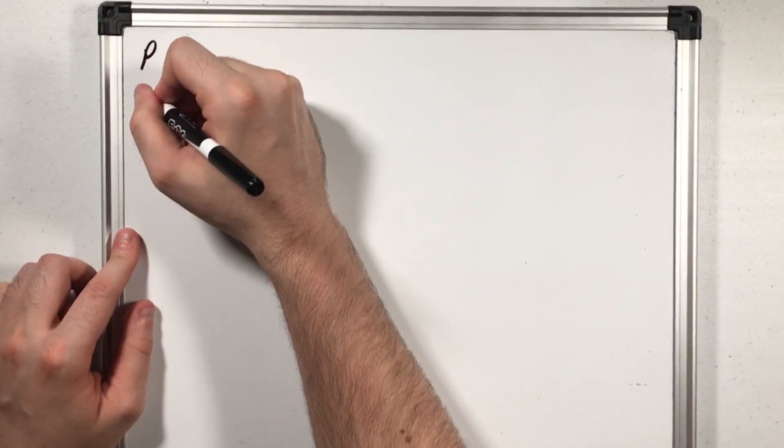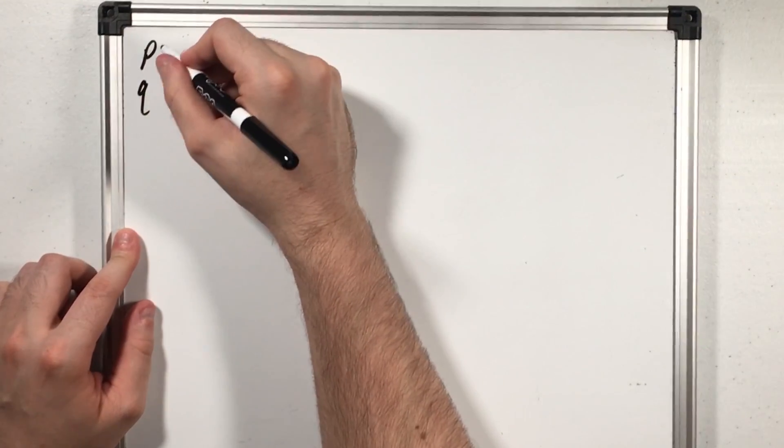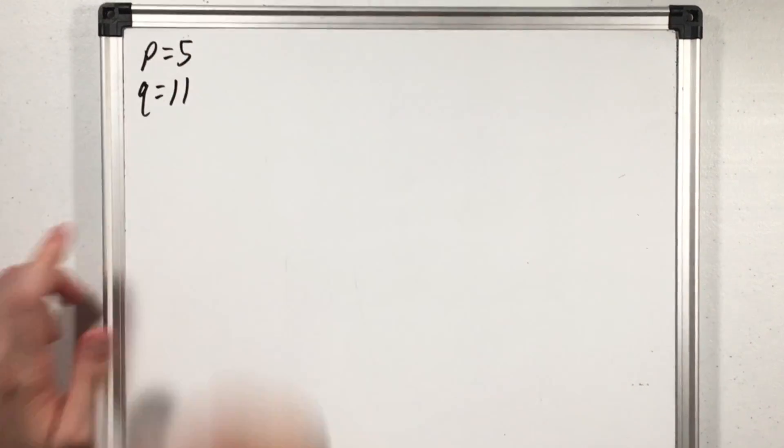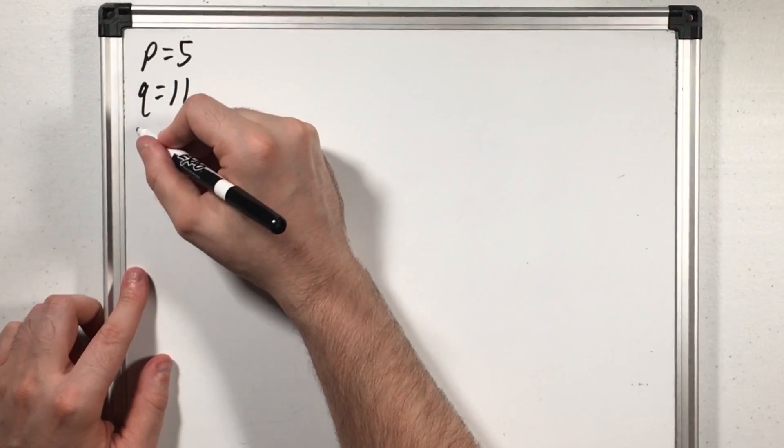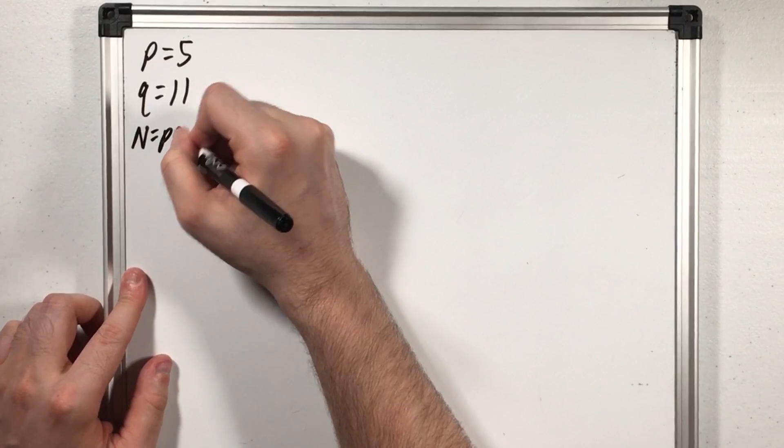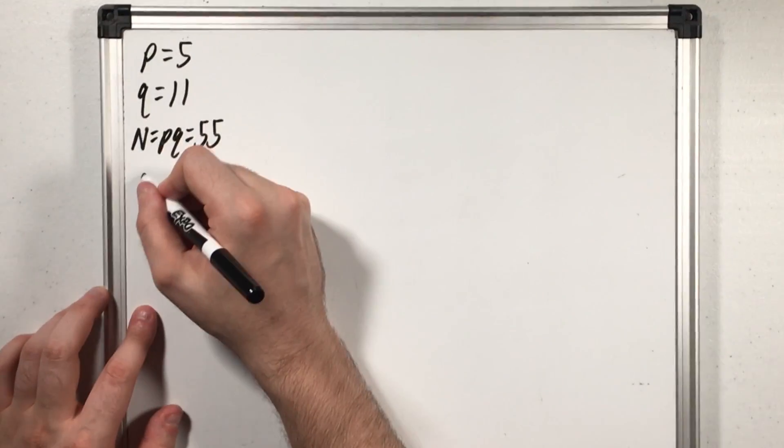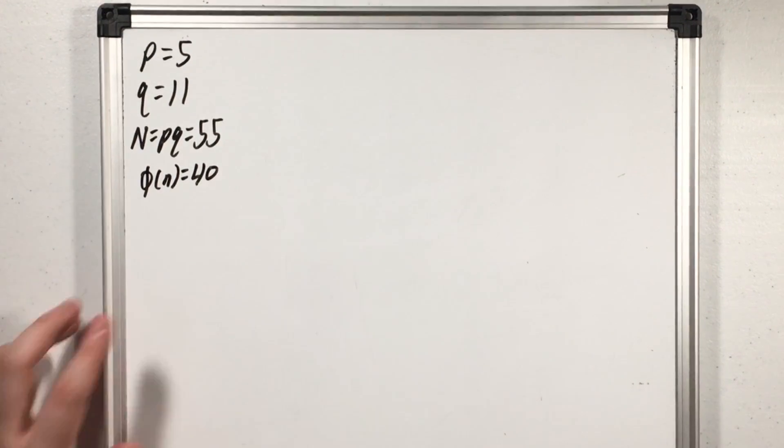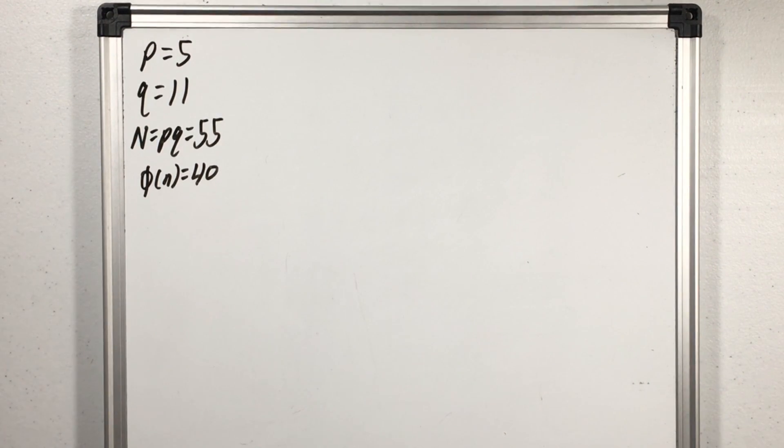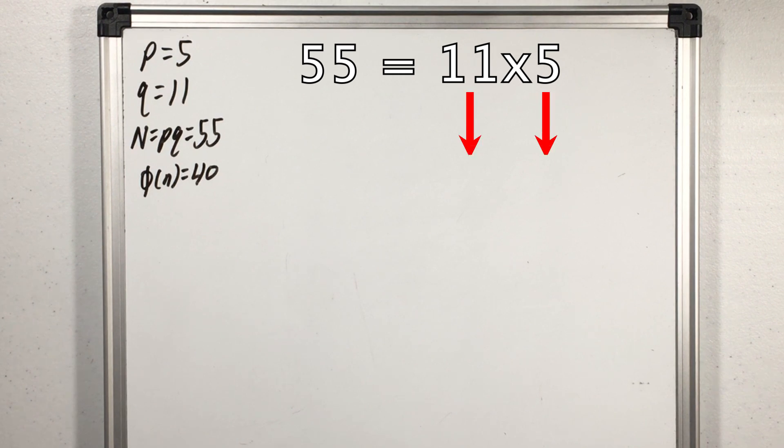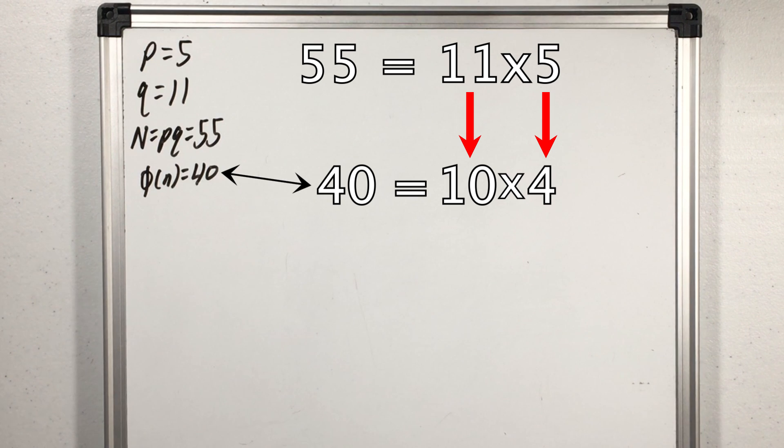First we're going to pick two random primes P and Q which let's just say are 5 and 11 then we're going to multiply them to get a value of n which in our case would be of course 55. Next we compute phi of n which is 40. Now I won't show why but when a number can be written as the product of two primes you just subtract 1 from each of those prime factors and multiply the results to get phi of n. So here we can see 40 integers are relatively prime to 55.